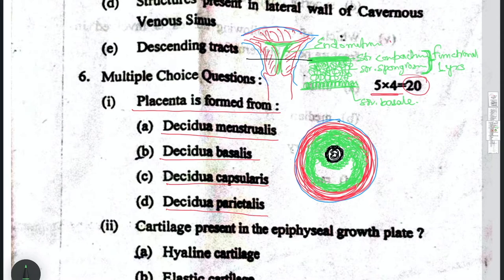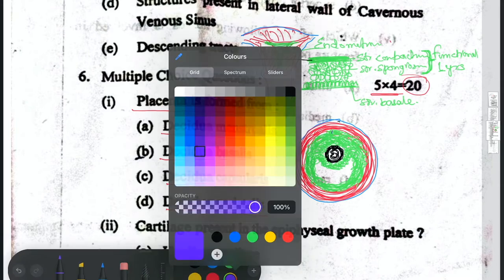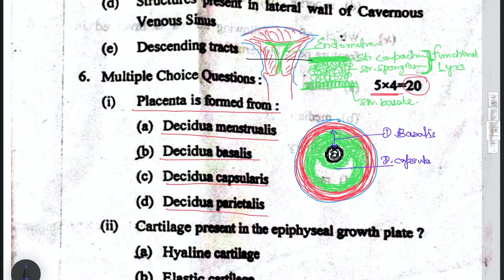The different names given to this endometrium after implantation — called decidua — are: the layer between the developing embryo and the maternal side, below the embryo, is called decidua basalis. The portion of decidua which covers the developing embryo on the luminal surface like a cap is called decidua capsularis. The rest of the uterine cavity is called decidua parietalis.